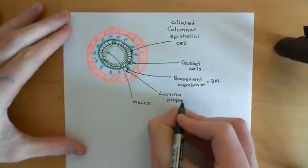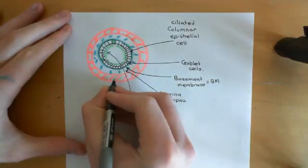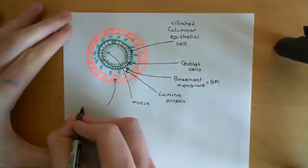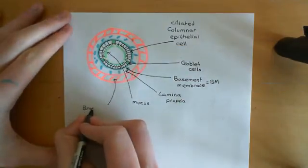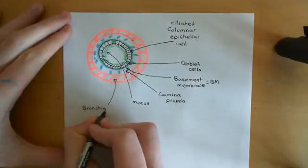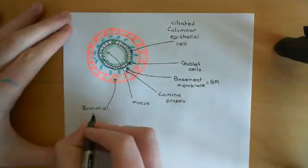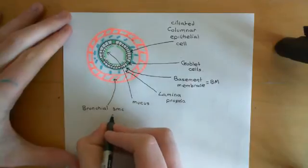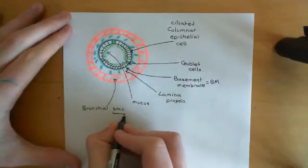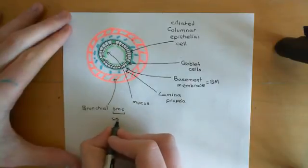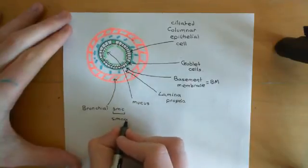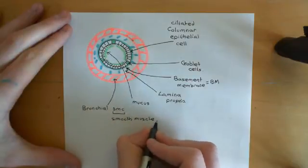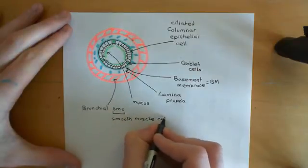Outside of the lamina propria, you then have the smooth muscle cell layer — the bronchial or airway smooth muscle cell layer. I'll abbreviate smooth muscle cell throughout this video down to SMC.